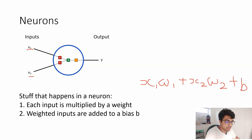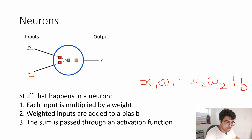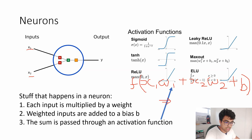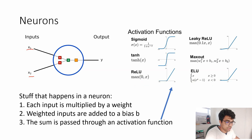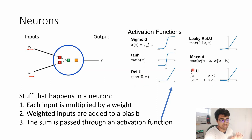The weights w1, w2 and bias b are obtained by training the neural network — right now they are variables, and once we train the network we obtain their values. The sum is then passed through an activation function f, which gives us the output. Common activation functions include sigmoid, tanh, and ReLU. Selecting activation functions, number of layers, and number of neurons per layer are all hyperparameters, which is a whole area of research and beyond the scope of this video.